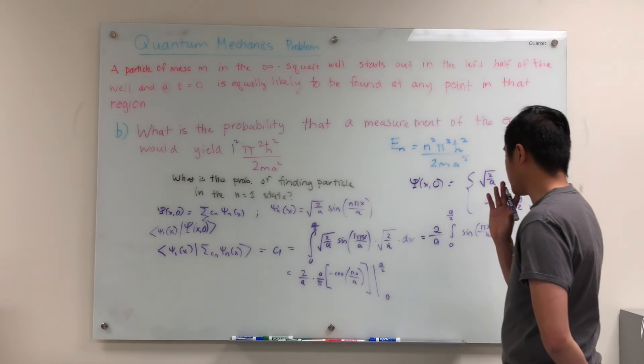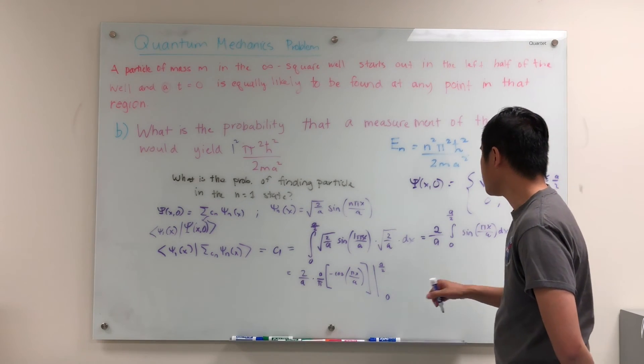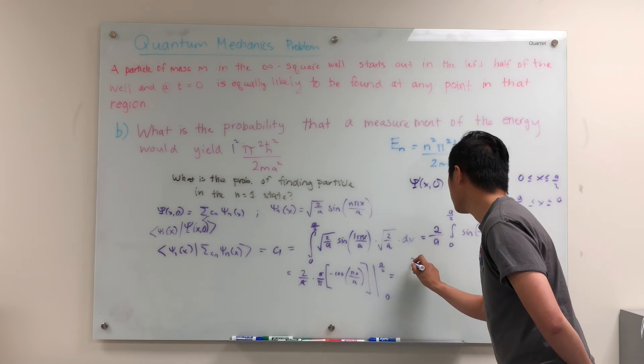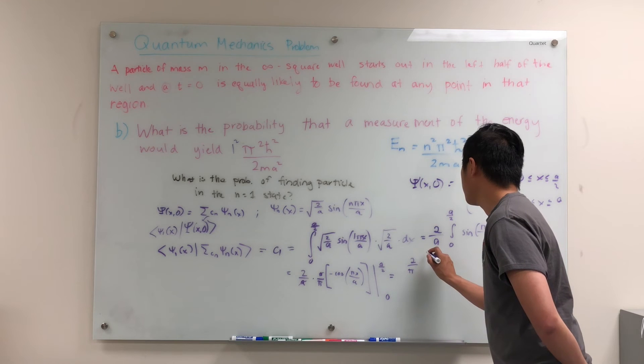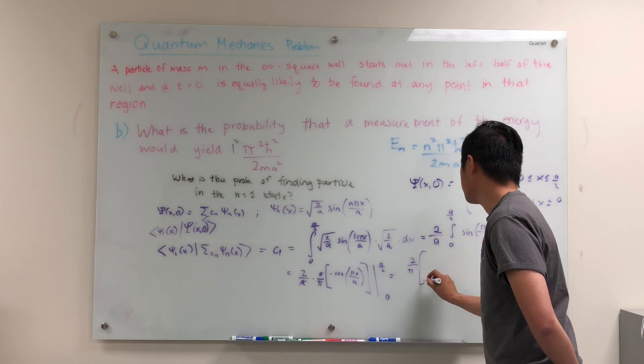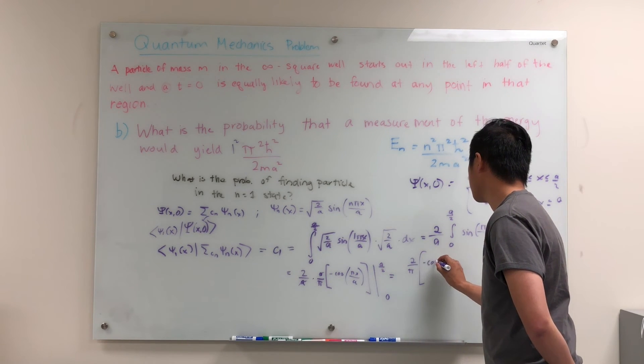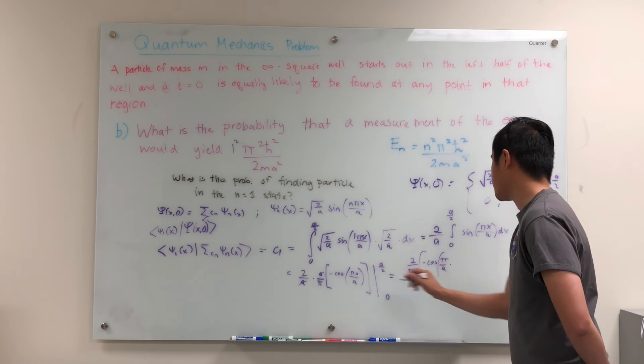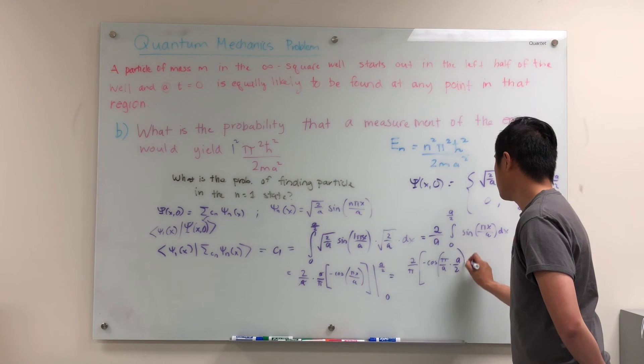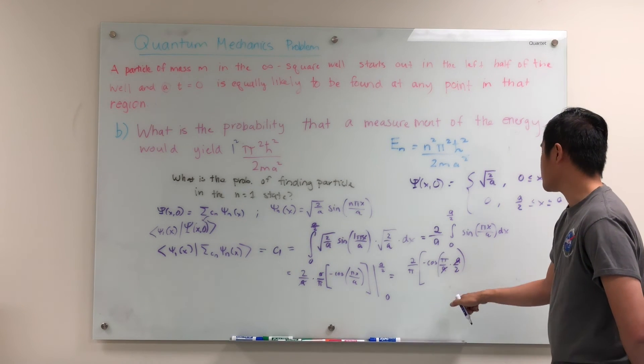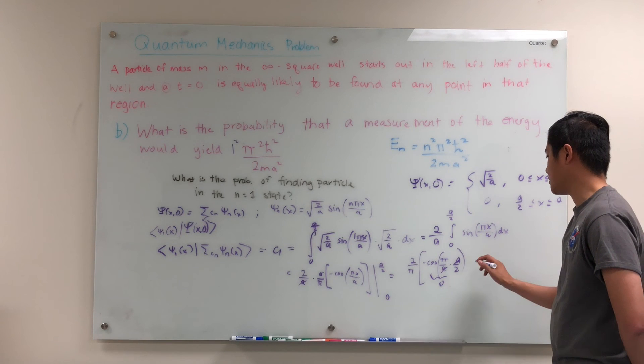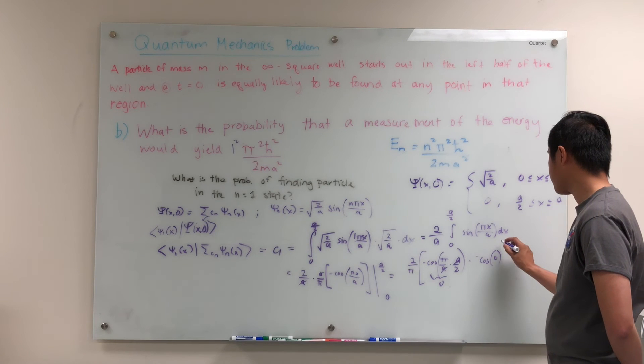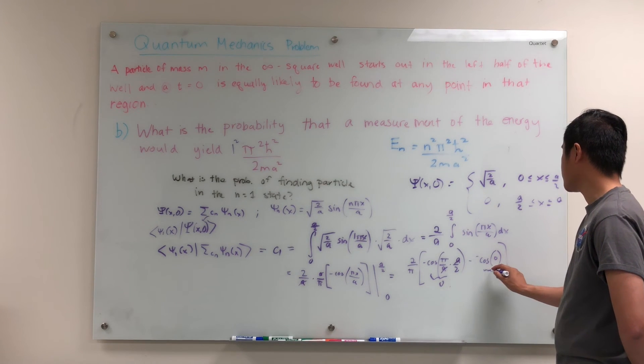I'm running out of space here, so I might have to erase things soon. But I think we can do it. So this a and this a are going to cancel. We'll just have 2 over pi. And then we'll have a negative cosine. Negative cosine of pi over a times x is a over 2. So you have negative cosine of pi over 2. This is actually 0 because cosine of pi over 2 is just 0. So we have a minus, minus cosine of 0.